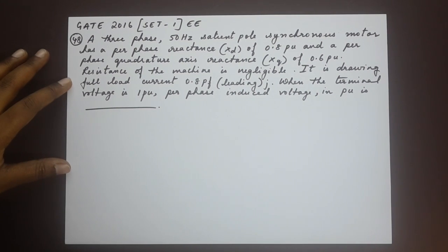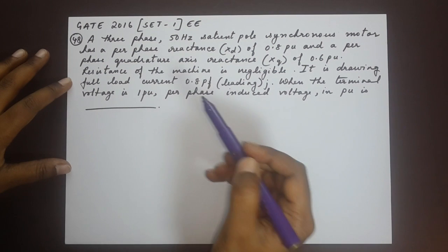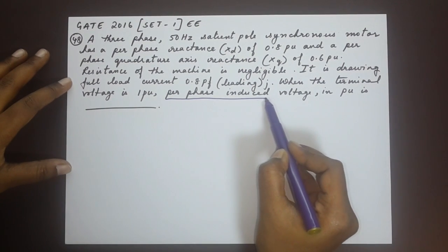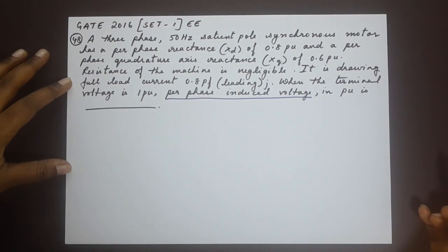per phase induced voltage in PU is dash. Per phase induced voltage is what we have to find.